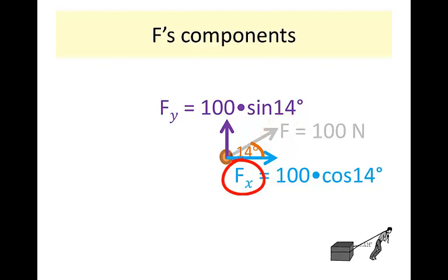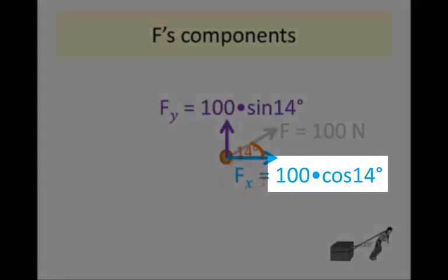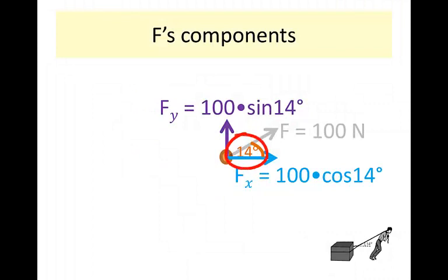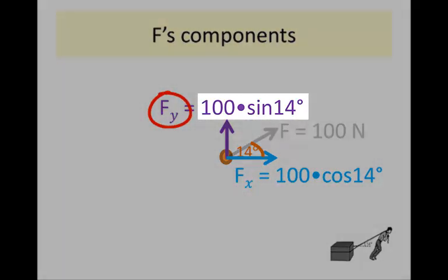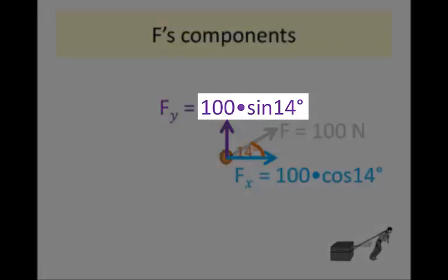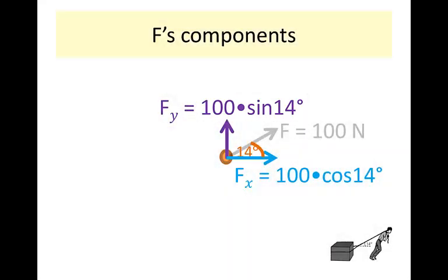The X component of F is calculated by taking F, which is 100 N, and multiplying by cos θ, where θ is 14 degrees — the angle between the horizontal and F. The vertical component of F is found by multiplying F (100 N) by sin θ, so sin 14°. One shouldn't draw both the components and the original vector, as that shows the same thing twice. For clarity the original F is shown grayed out to indicate that Fx and Fy together make up F.